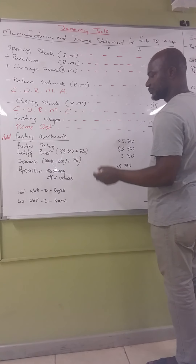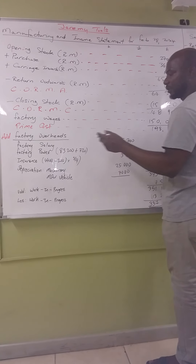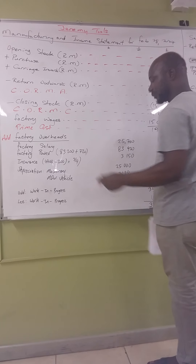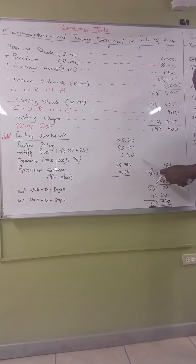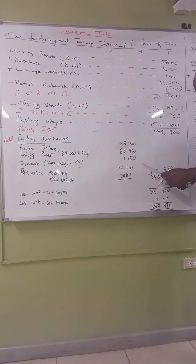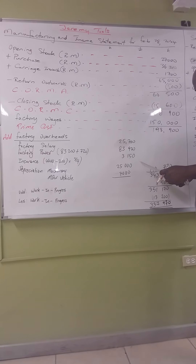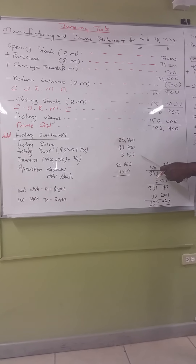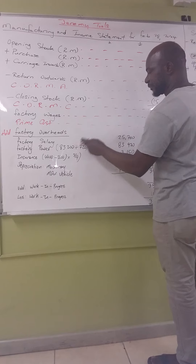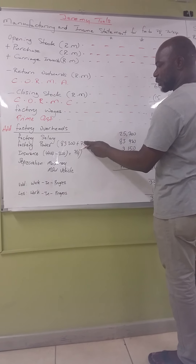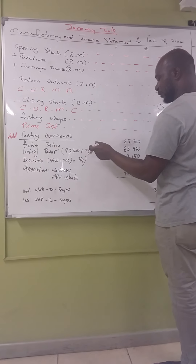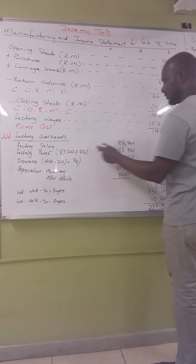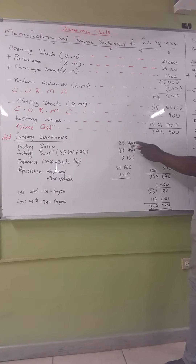Next we have factory power. Looking at the question, factory power was 83,200. But note 2 states that factory power was in arrears — 720 was owing. So you add the arrears to the amount paid to get the total factory power for the year: 83,920.